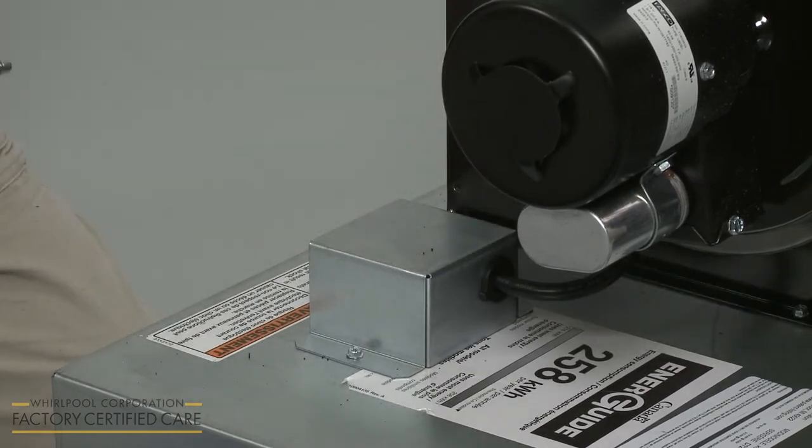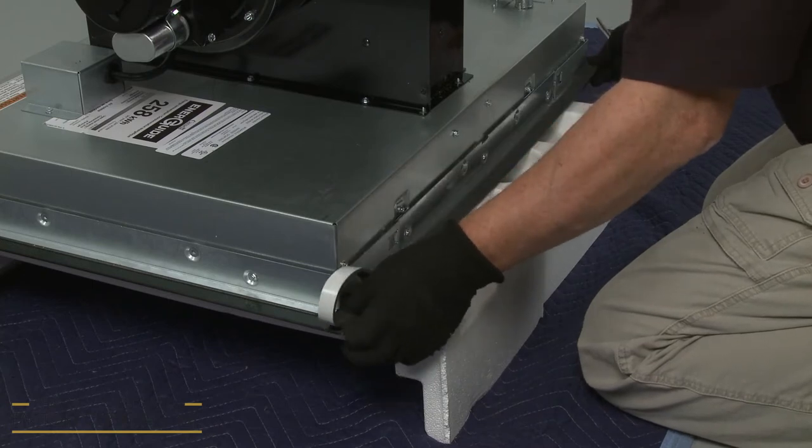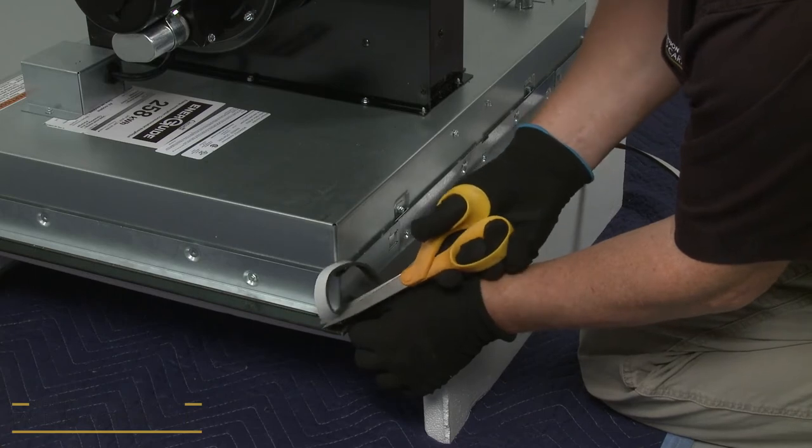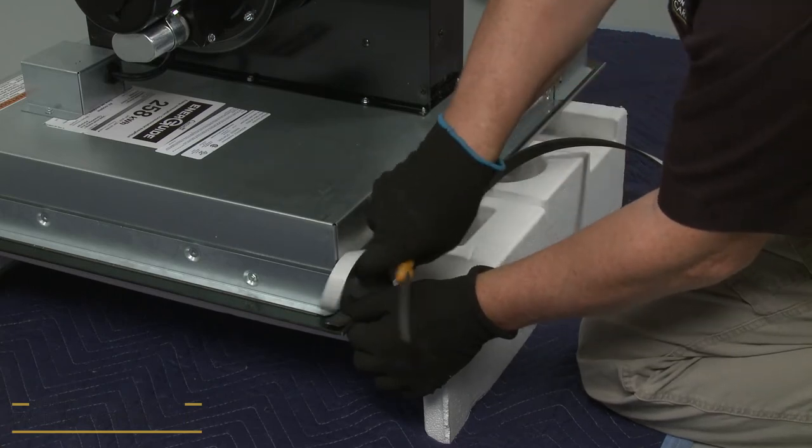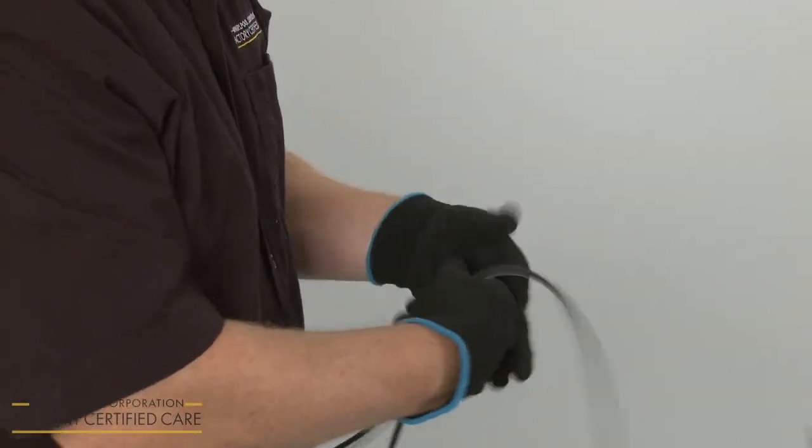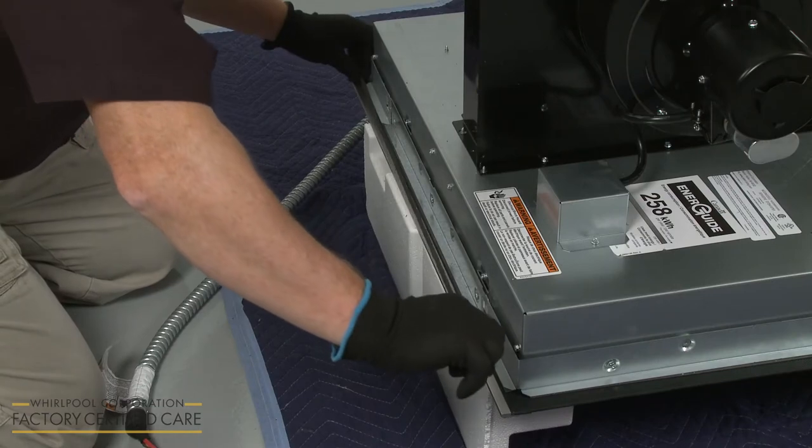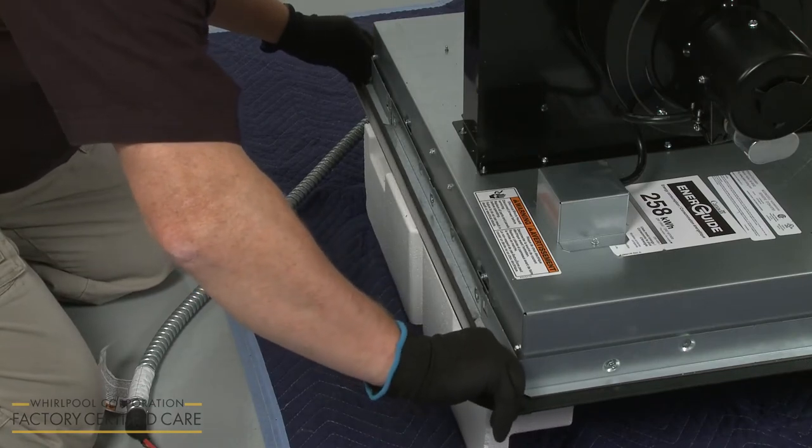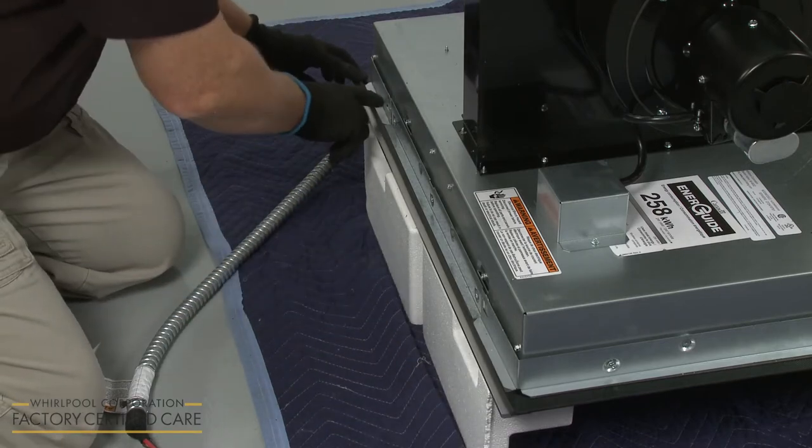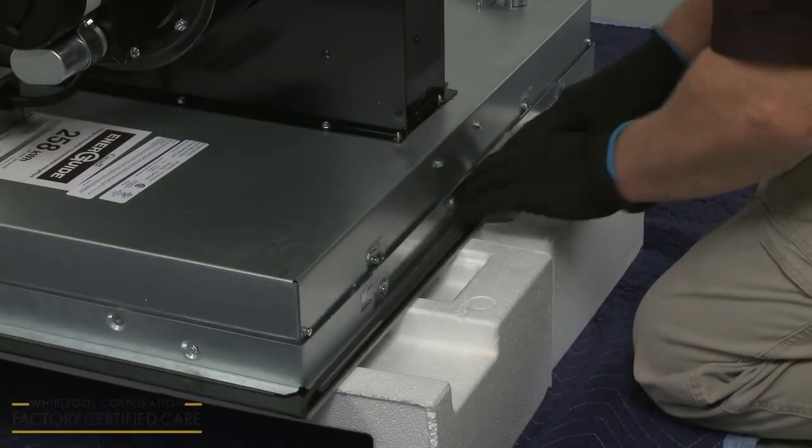Now determine the appropriate length for the protective foam strips by aligning the strips with the front or rear edge of the cooktop, then trim the strips accordingly. Peel one of the strips from the backing to expose the adhesive and position the strip on the bottom front lip of the cooktop, a quarter-inch from the edge. Position a second strip on the rear lip.